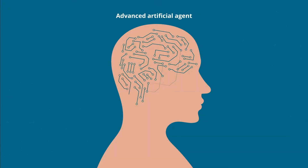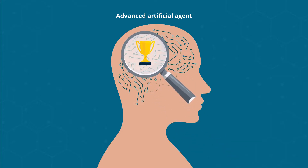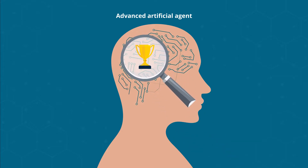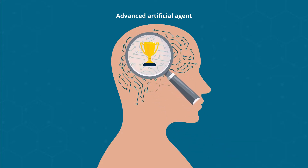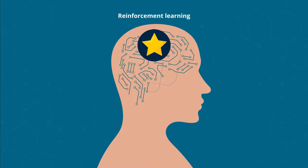Advanced artificial agents are often characterized by an AI model that selects its actions towards a specific goal in an unknown environment based on rewards. This approach is known as reinforcement learning.